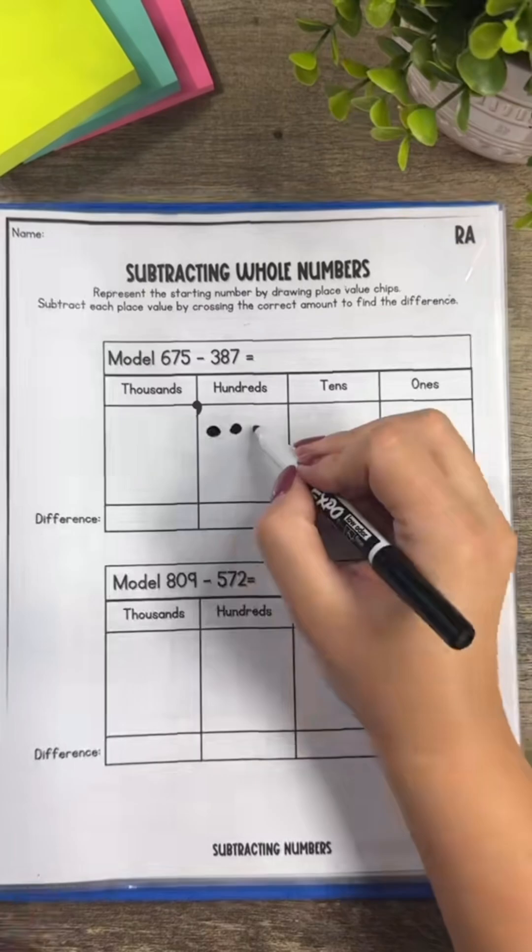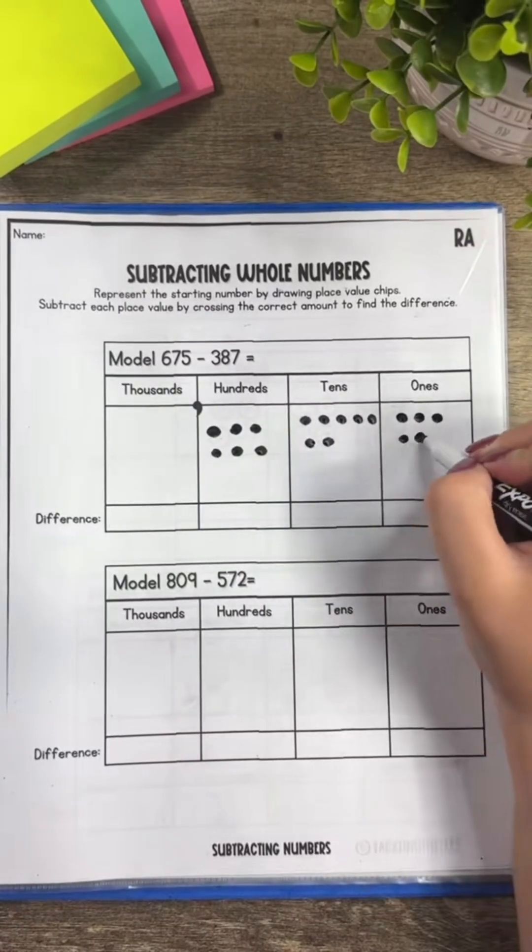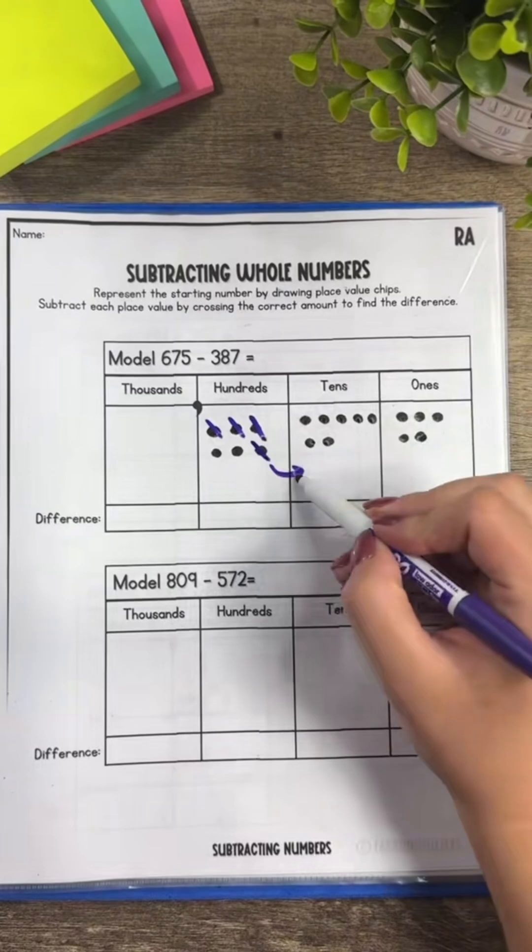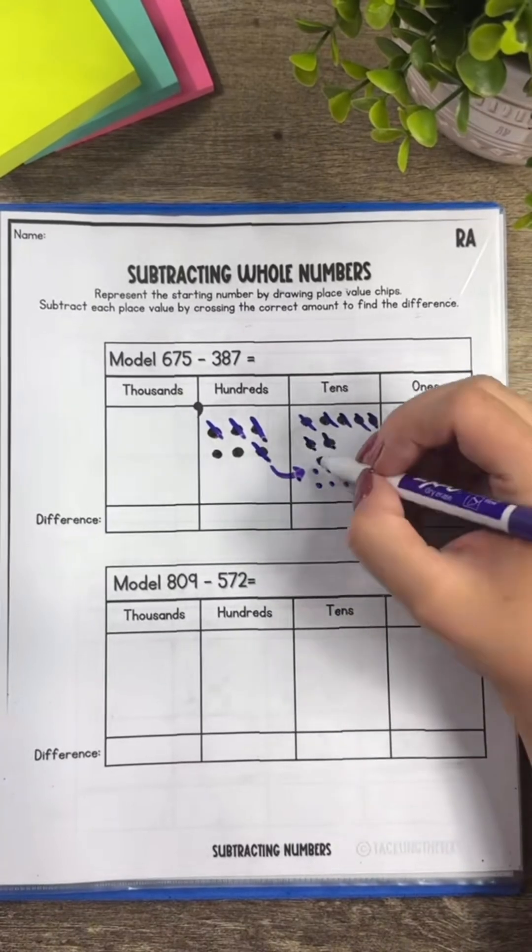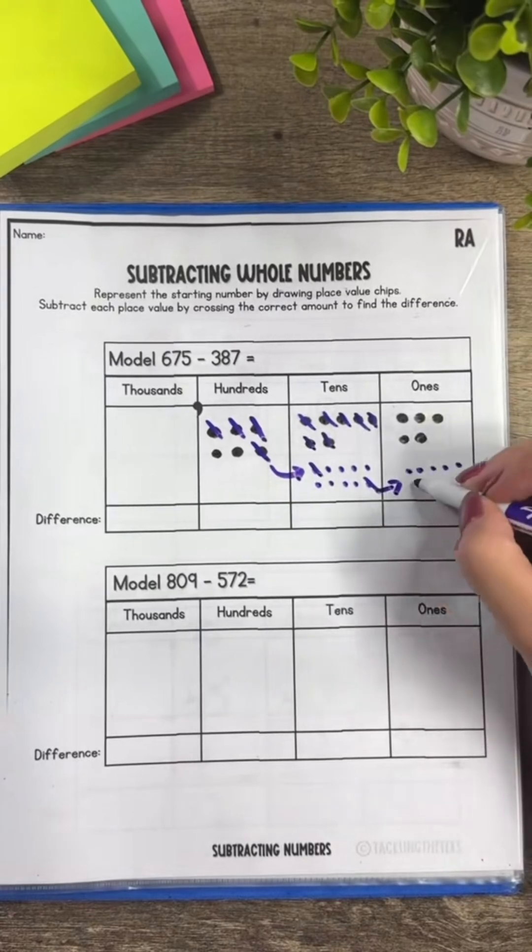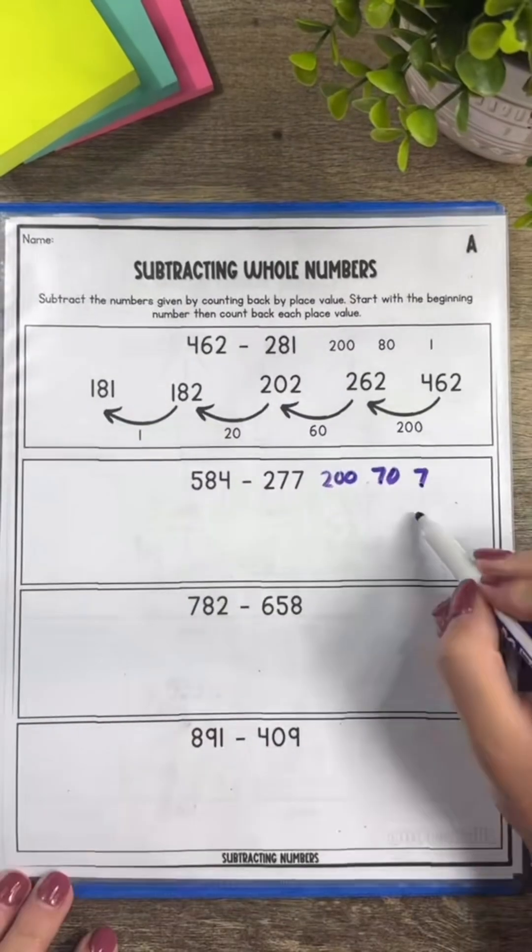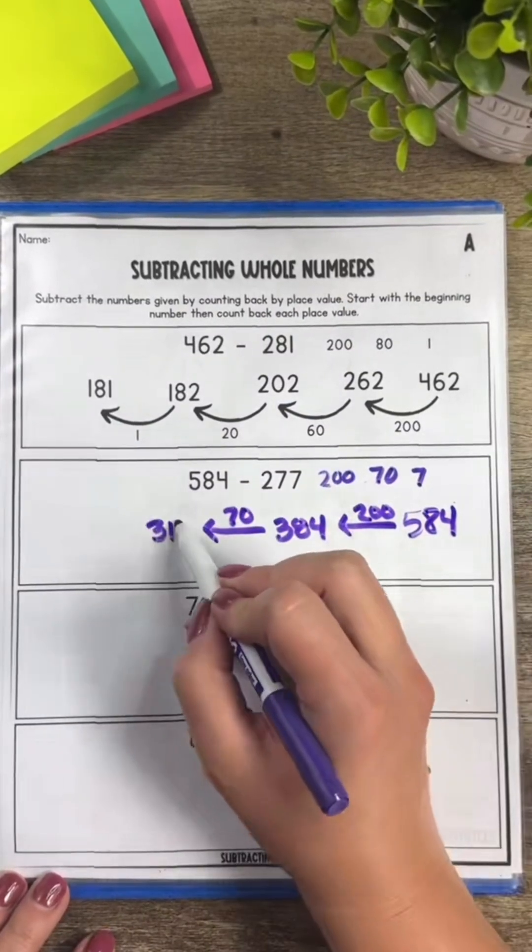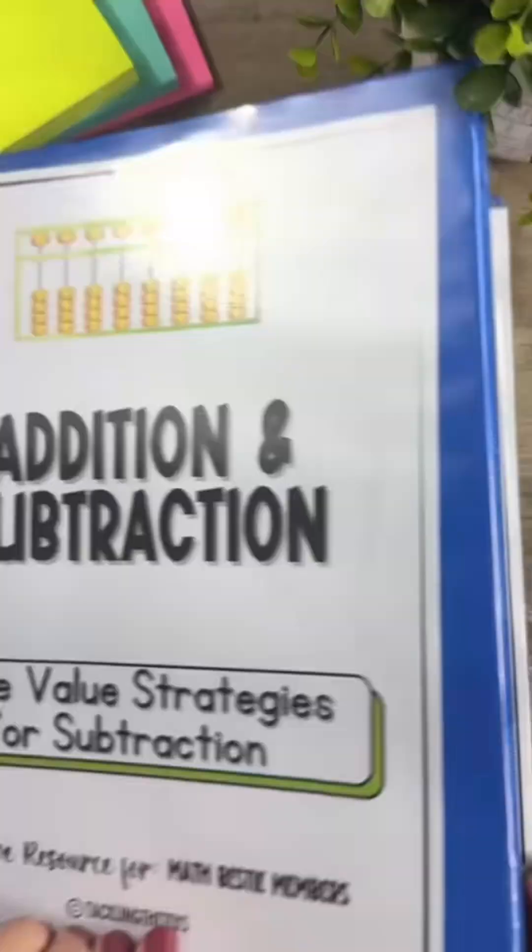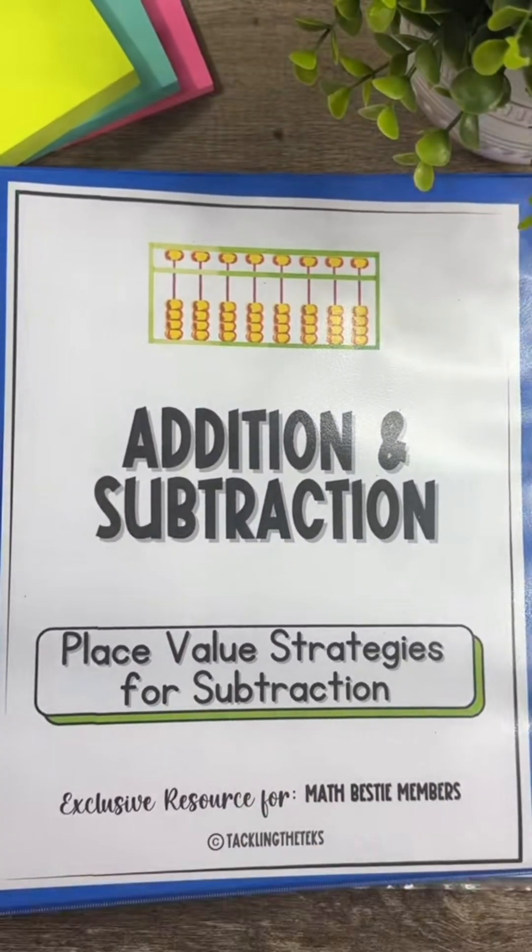When students get to third grade math we tend to take the place value concepts out of addition and subtraction. We want to make sure that we're not just fostering single digit thinking. So if you want some confident mathematicians in your classroom, focus on using those pictorial models and strategies that hold place value. That can set them up for success when they get to the standard algorithm.